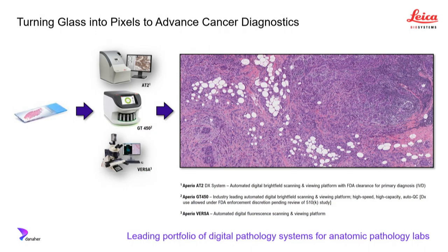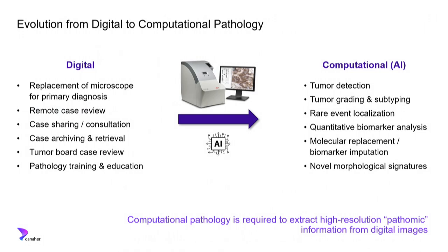What does this have to do with Leica? Leica is involved in turning glass into pixels, with a leading portfolio of digital pathology platforms that convert virtually any glass histopathology slide into a high-resolution digital image like this one. The high-resolution information in these images is really at the core of what's driving the transformation in pathology from digital to computational pathology, happening over the last several years. For those who have an opportunity to chat with Andy Beck of PathAI, he's really the expert in this field.